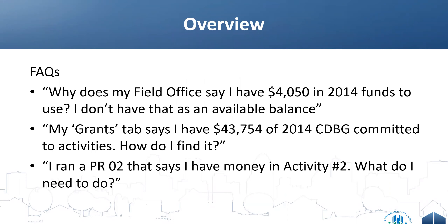We've been receiving many questions on the IDIS Ask a Question on HUD Exchange. A few examples: Why does my field office say I have $4,050 in 2014 funds when I don't see that as an available balance? My grants tab says I have $43,754 of 2014 CDBG committed to activities — how do I find it? Or: I ran a PR02 report and it says I have money still in activity two — what do I need to do?